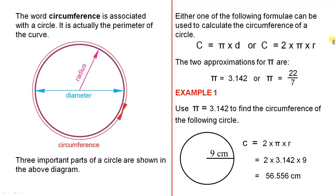Either one of the following formulae can be used to calculate the circumference of a circle. You can use C equals pi d, or C equals 2 times pi times r. The two approximations for pi are pi equals 3.142, or pi equals 22 over 7. They're the two approximations I'll give you, and it's possible to be given other approximations which are very close to each of these. The reason I say approximations is pi is one of those numbers in mathematics which does not have an exact value. Hence, we use the two approximations.